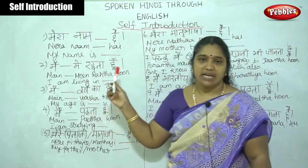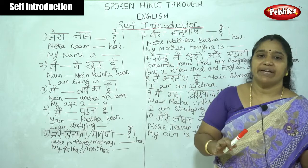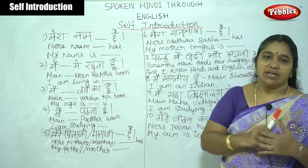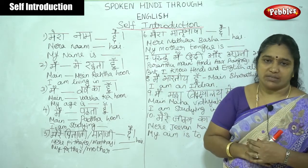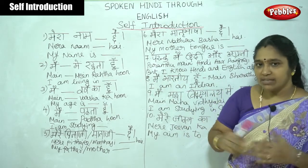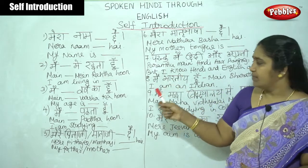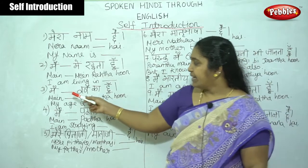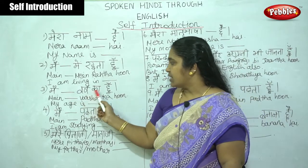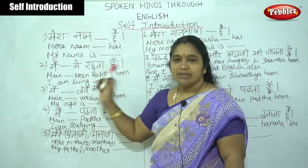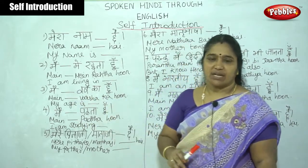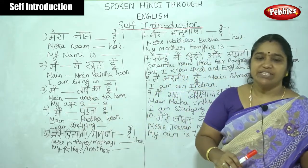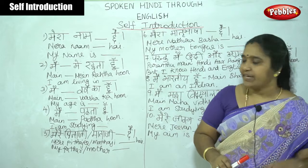This self-introduction is given by a college student. For age, we say: 'Mai dash varsha ka hoon.' For example, 'Mai bees varsha ka hoon' — I am twenty years old. Bees means twenty.